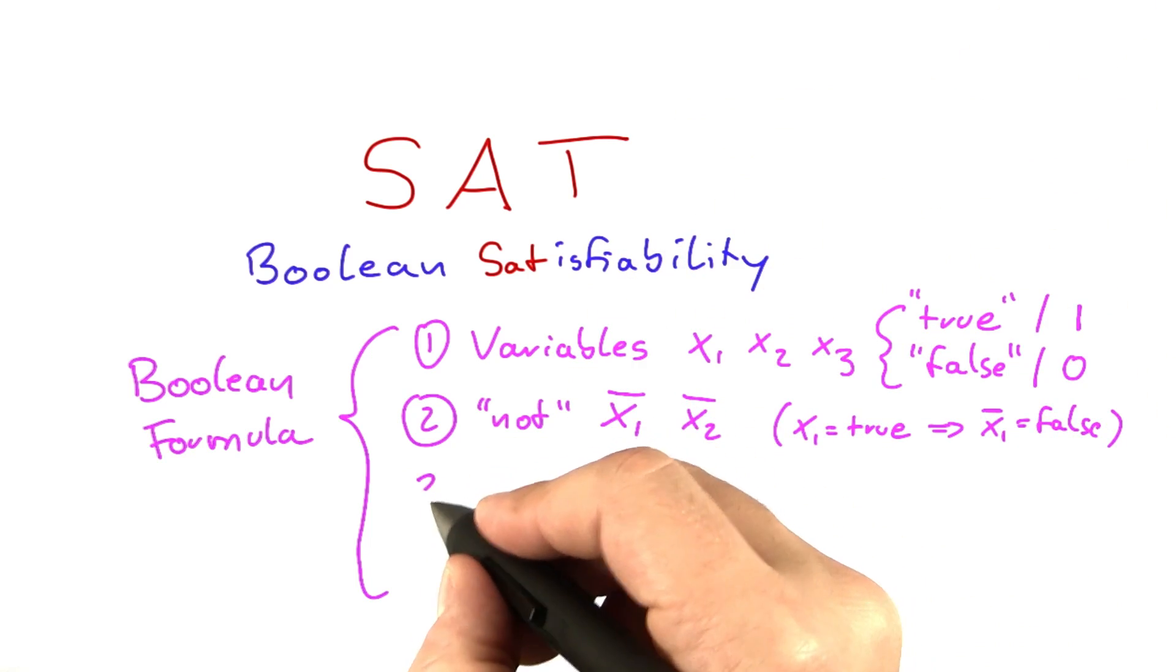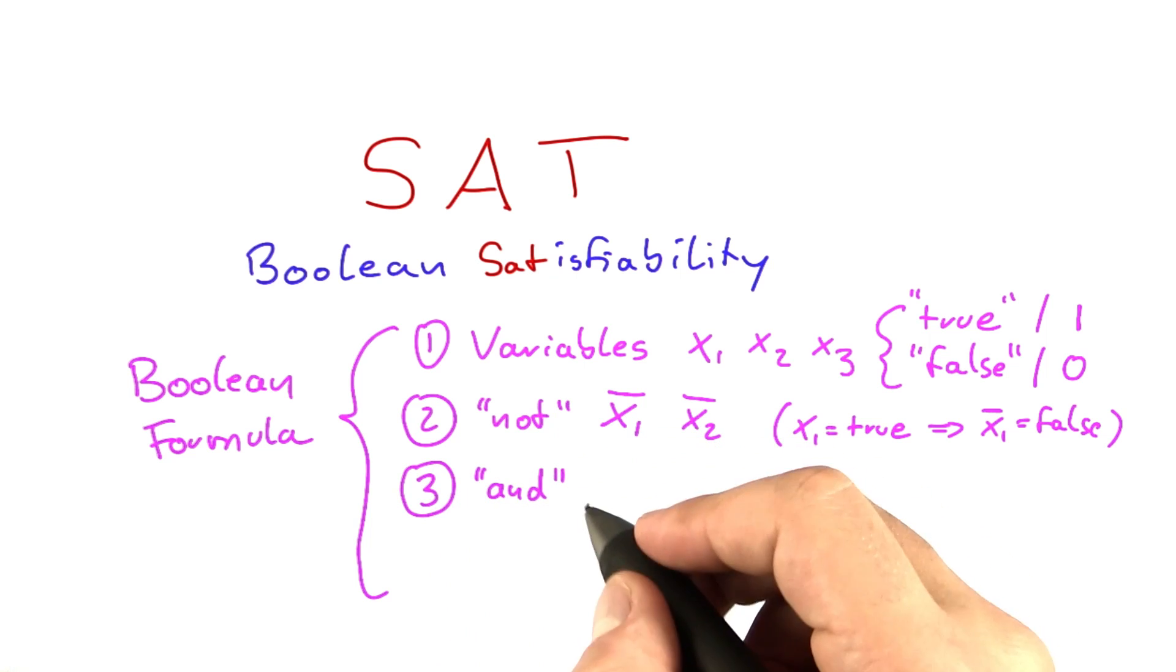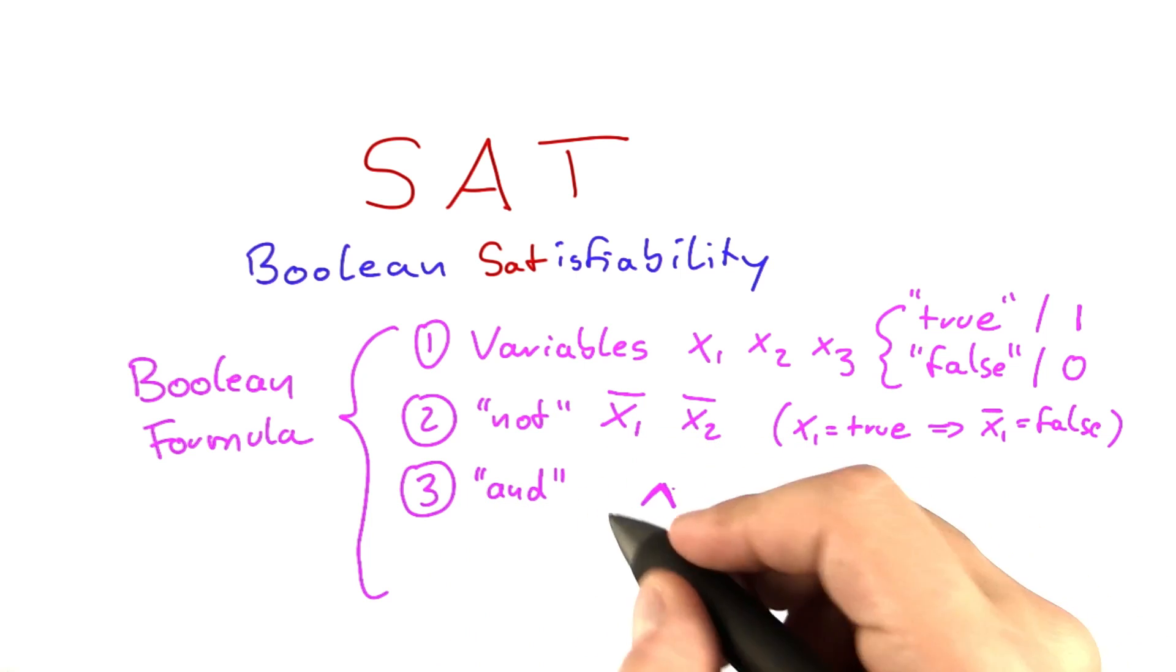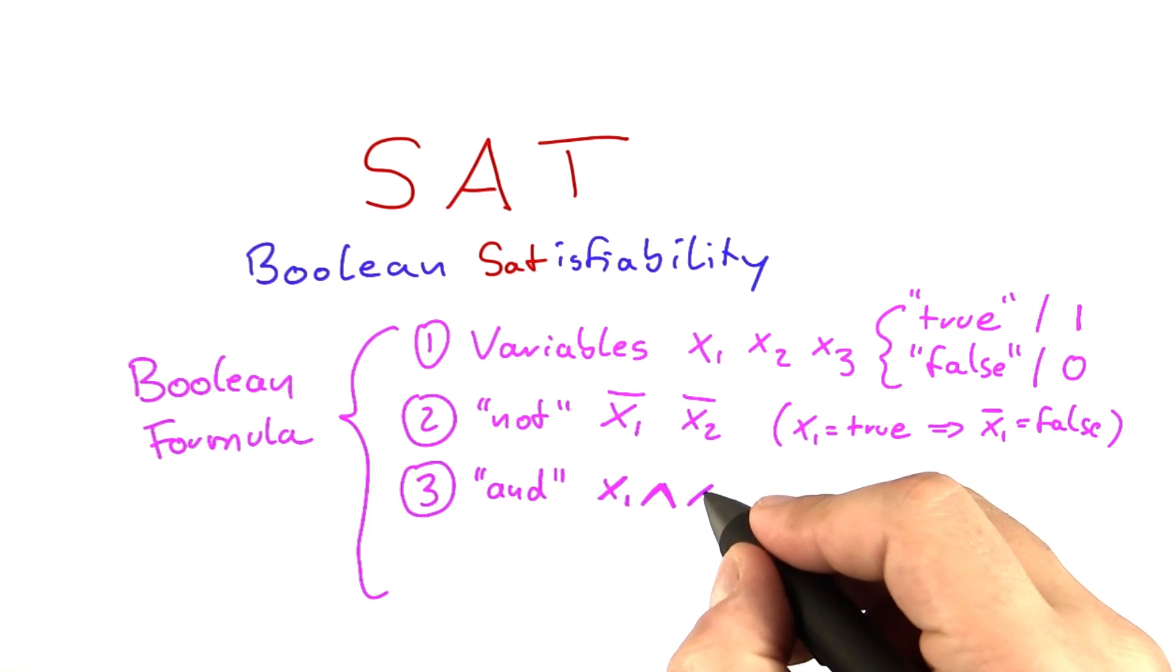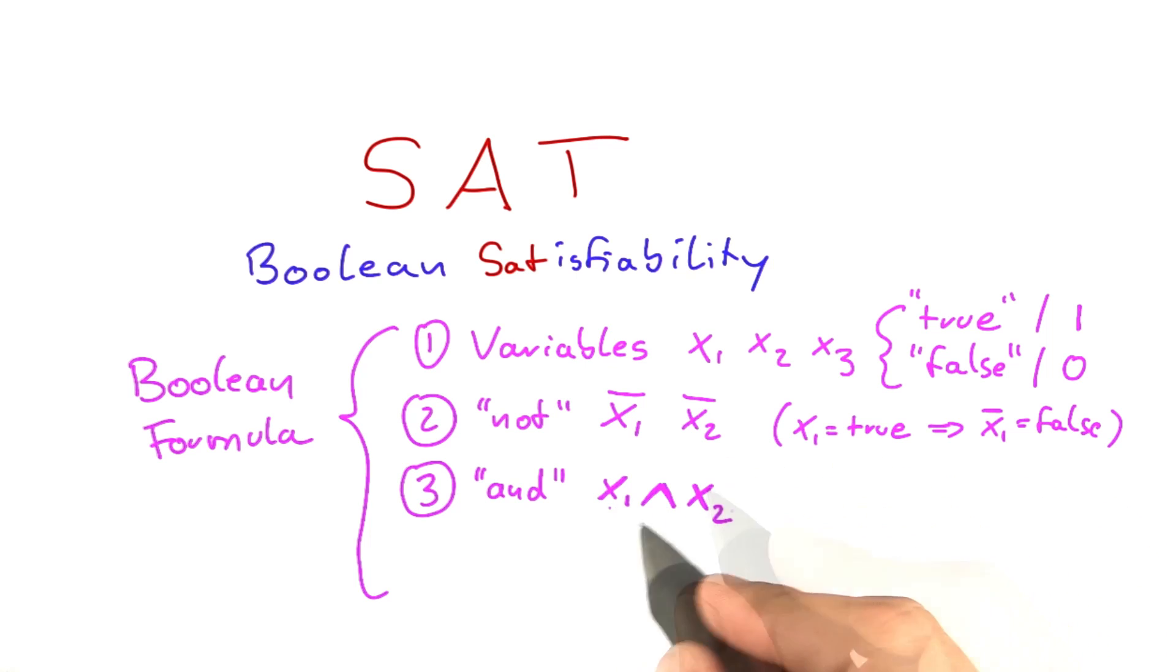Then you have another operator called and. This and is usually written like this, and it works on two variables, so you have x1 and x2 or any other variable. The way it works is that this expression, x1 and x2, is true only if x1 is true and x2 is true. Otherwise, it's always false.